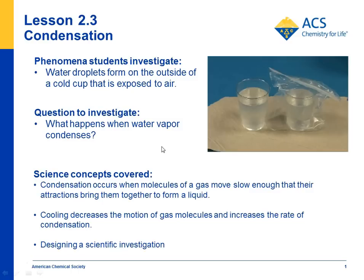It's the start of a conversation about condensation. The question is what happens when water vapor condenses — why did this occur on the molecular level? The big ideas you try to get to in the lesson are that condensation occurs when the molecules of a gas, in this case water vapor, move slowly enough that they attract each other and come together, changing from a gas to a liquid. Another aspect is that cooling increases the rate of condensation, and kids will actually help you design an investigation to see if that's true. A big part of this activity is that students help in the design of the investigation.